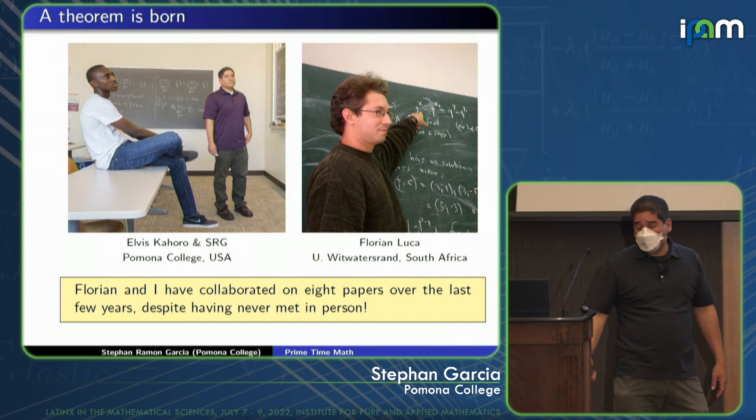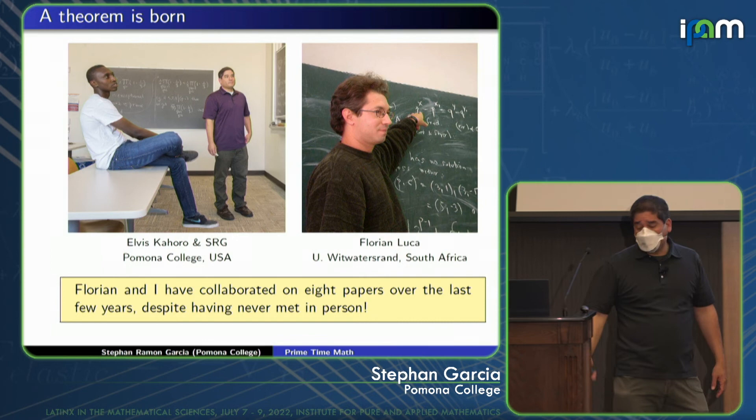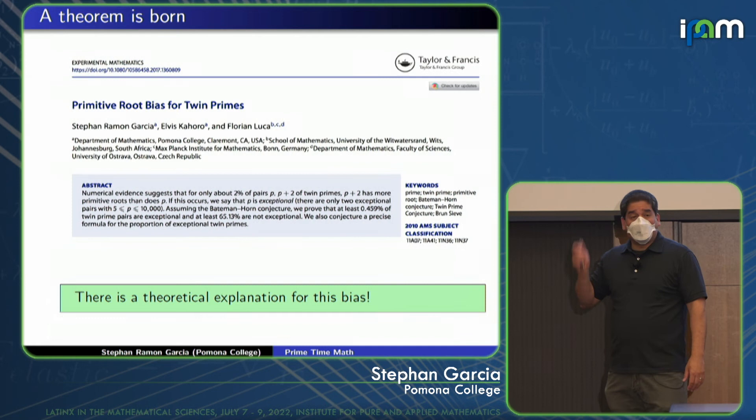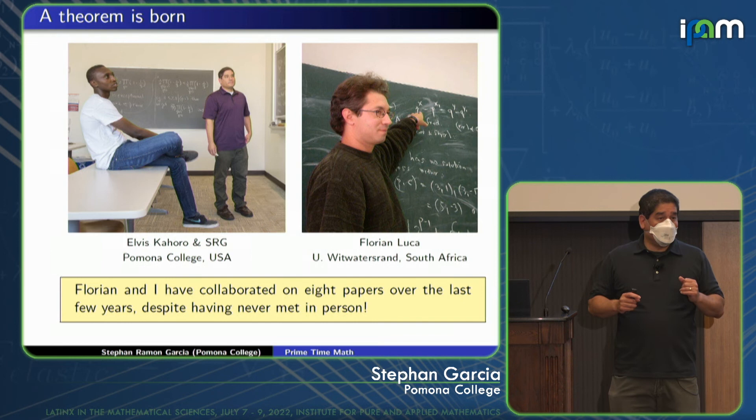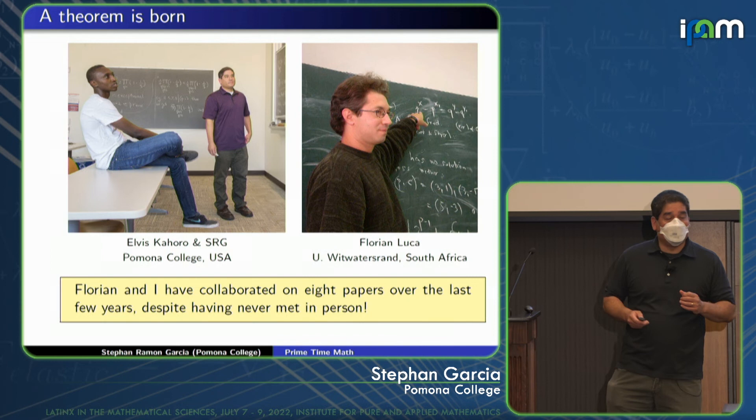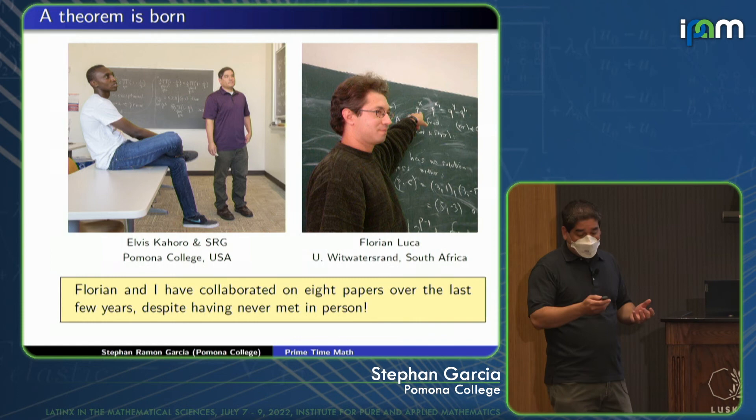The point of this is that this shows the remarkable nature of mathematical collaboration these days. Florian Luca is a noted number theorist, and we've written many papers over the years. He was one of the co-authors on this paper. We've written eight papers over the last 10 years or so together. I have never met him in person, and I think it's likely I was never even on the same continent with him. So it's remarkable that we can communicate and do mathematics at such great distances these days.